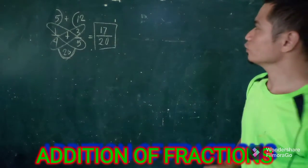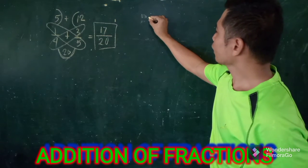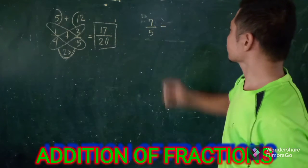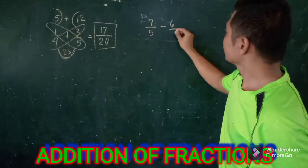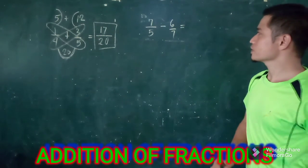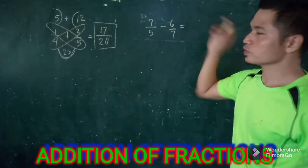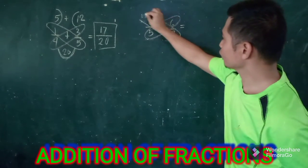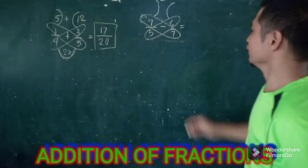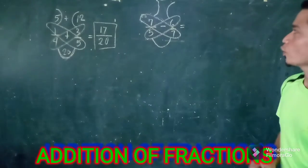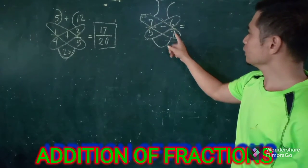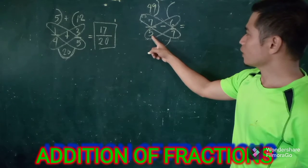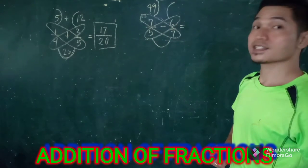For another example, you're asked to subtract 7/5 minus 6/7. All we have to do is use the butterfly method again. Let us draw it out. We have 7 times 7 is 49, and 5 times 6 is 30.